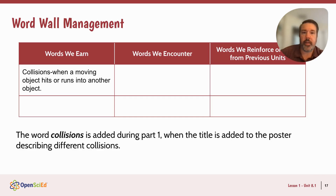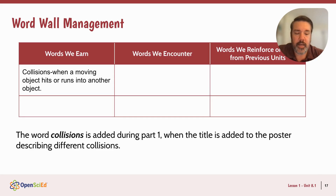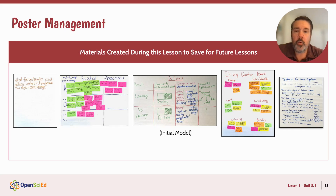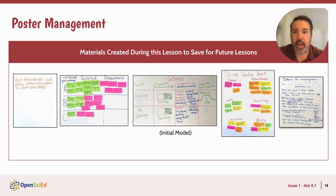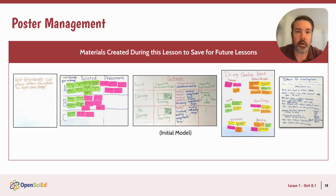There is one word we introduce in this lesson: collisions. We introduce that during part one when we add a title to the poster naming the different types of collisions, and we formally define it as when a moving object hits or runs into another object. We have lots of great posters in this lesson that you'll refer back to at future points — our factors poster, our related phenomena with all our collision stories, our initial model, our driving question board, and our ideas for investigation. Make sure you hang on to those.